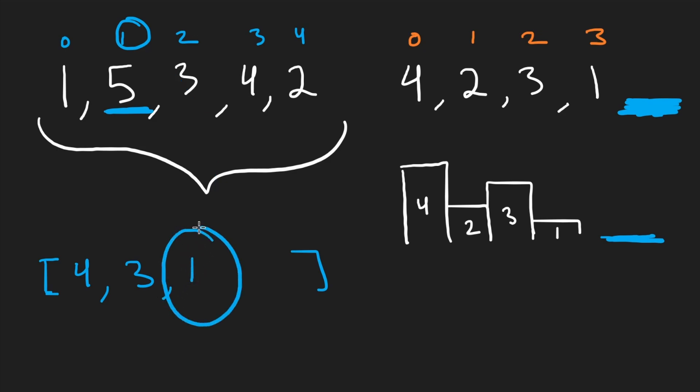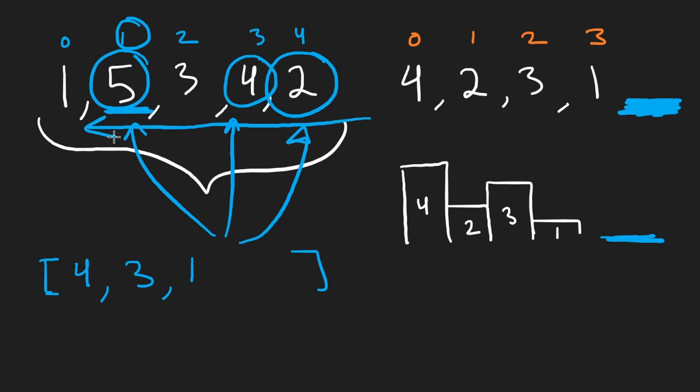We're at index one. We're going to compare it to the element at index three. Is five greater than four? Yes, it is. So now we take five or rather the index of five, which is one. And we add it here. This is the new maximum. The last one that we add here will be the max that we have seen so far running in the reverse direction. Now, lastly, I will be here at index zero. Is one greater than the height at index one, which is five? It is not. So now we're done. So what we determined is that the element here and here and here, these three can see the ocean. Everything else cannot.